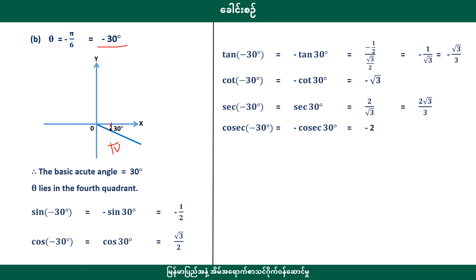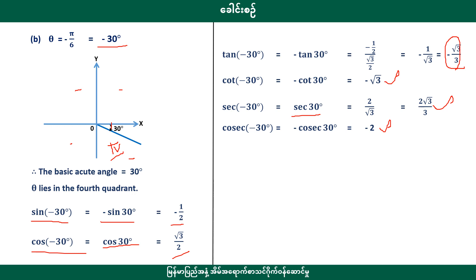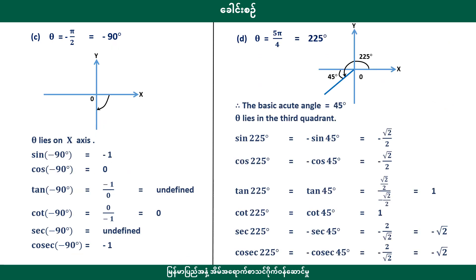So this time 3, 2, 3, 3. Minus 3, minus root 3. 2 by root 3 is 3. We will write a letter from Y to Y. It will be minus 90 degrees.